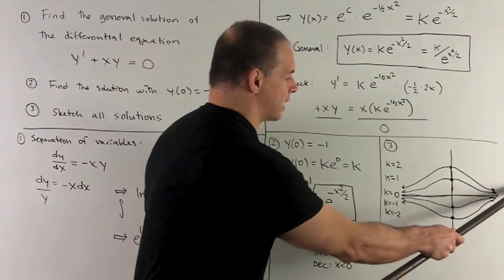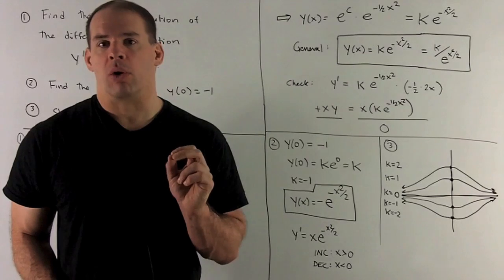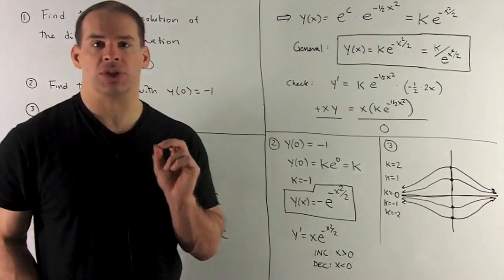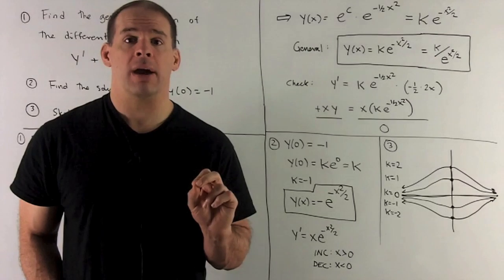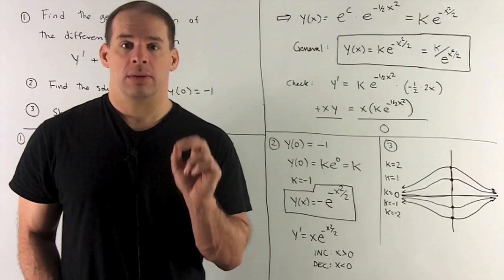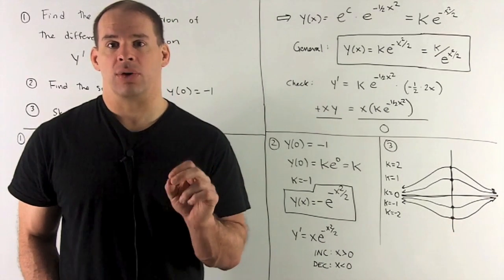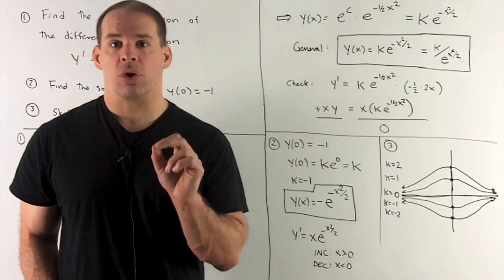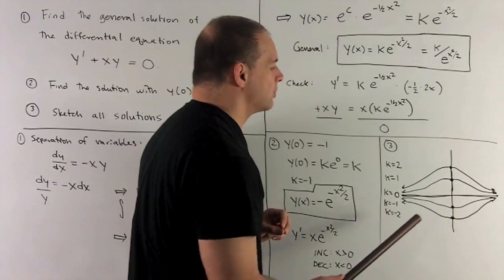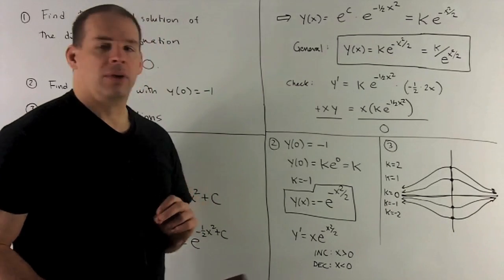Using the derivative: y prime is the function multiplied by minus x, giving x times e to the minus x squared over two. Since e to the minus x squared over two is always positive, the sign of y prime depends only on the sign of x. If x is greater than zero, y prime is positive and we're increasing; if x is less than zero, y prime is negative and we're decreasing. At zero we have a critical point. So on the right side the graph increases up toward the asymptote, and on the left side it decreases down to our point on the y-axis. That's the graph for the specific solution.